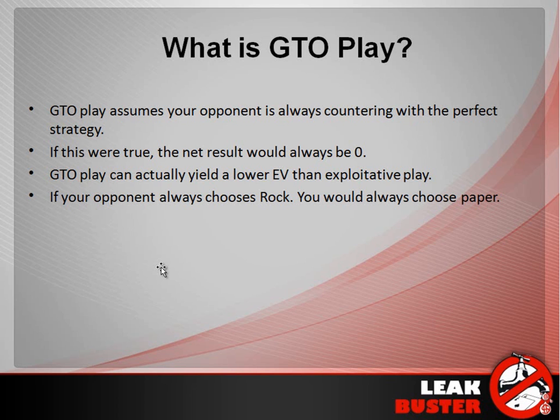A very simple example is in Rochambeau (Rock-Paper-Scissors): if you're playing a game theory optimal strategy, you should just pick rock, paper, and scissors one-third of the time equally. If you know, however, your opponent is always picking rock, then you shouldn't use a GTO strategy. You should switch to an exploitative strategy and choose paper every time, because you know they're going to choose rock — paper covers rock — and you're going to win. So you don't want to use a GTO approach when you recognize the imbalance in your opponent's strategy.